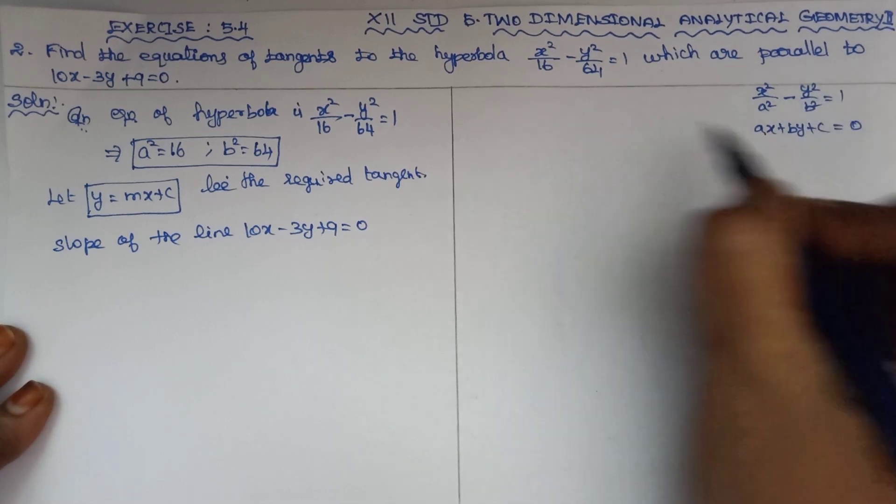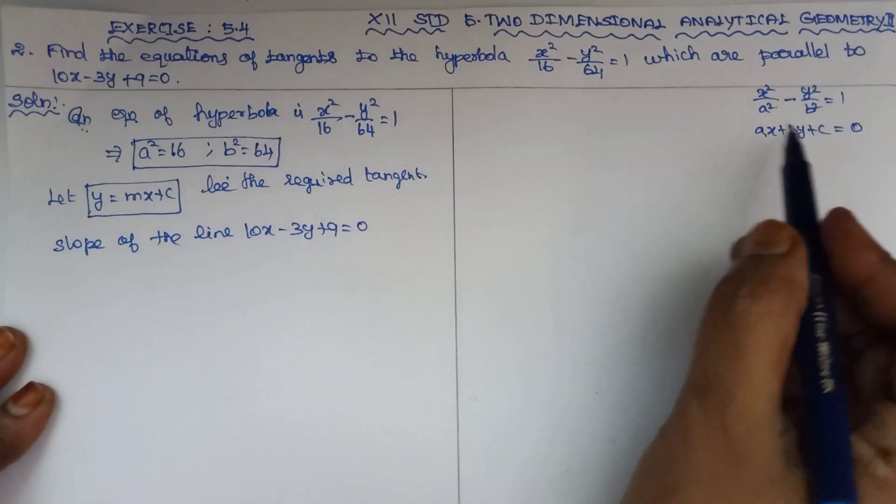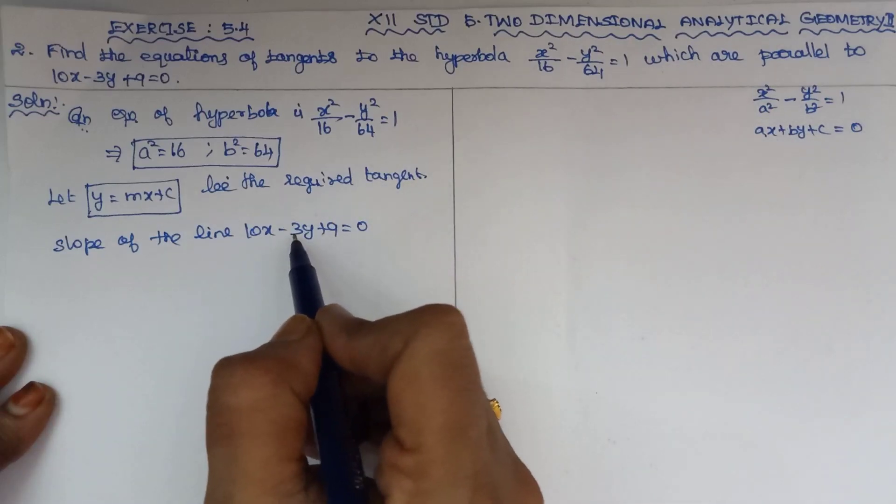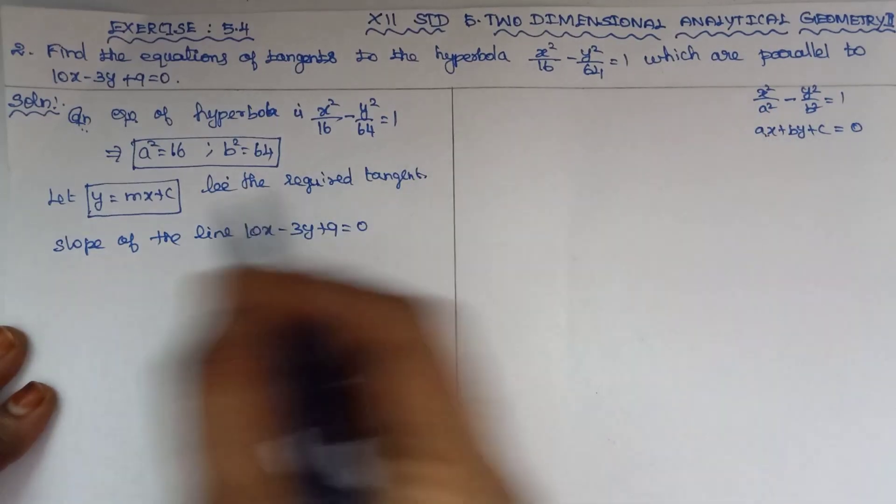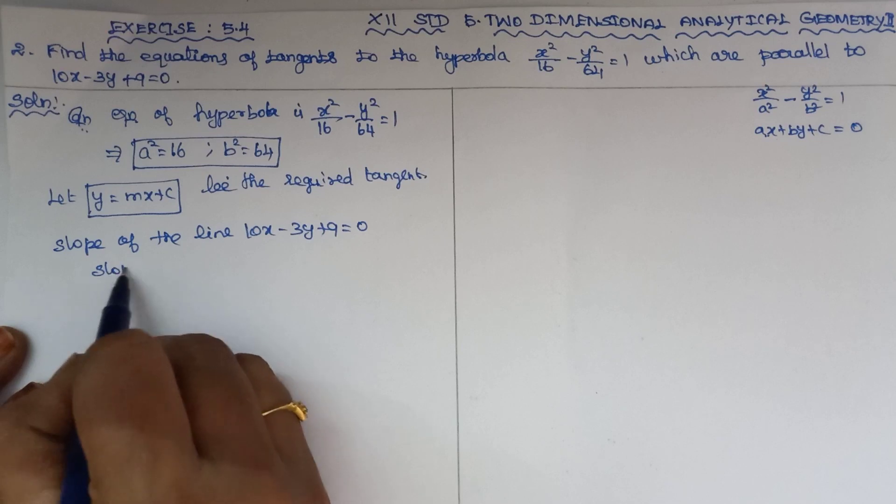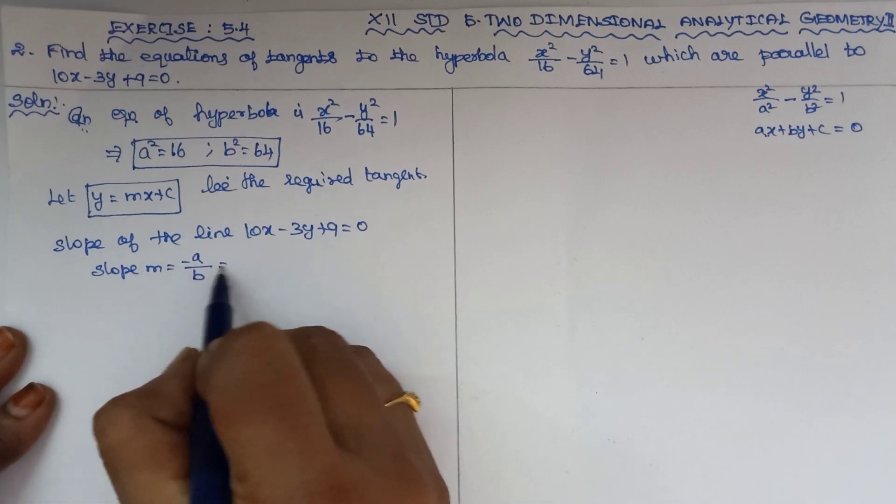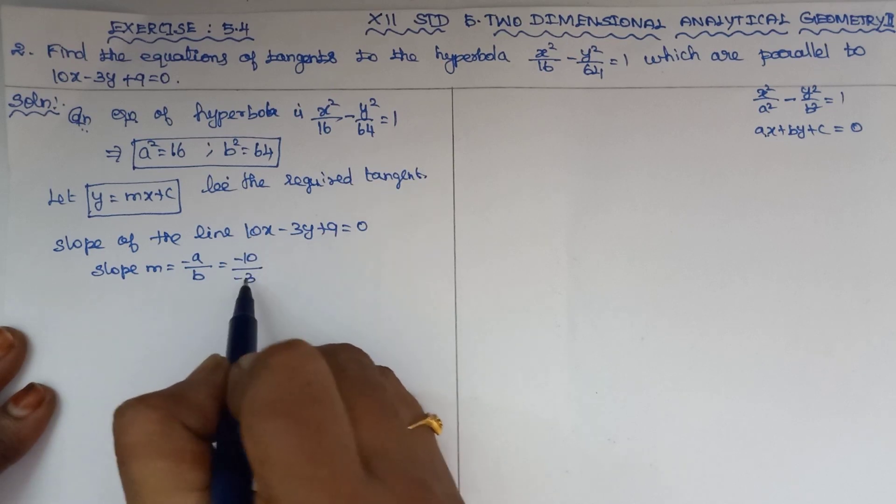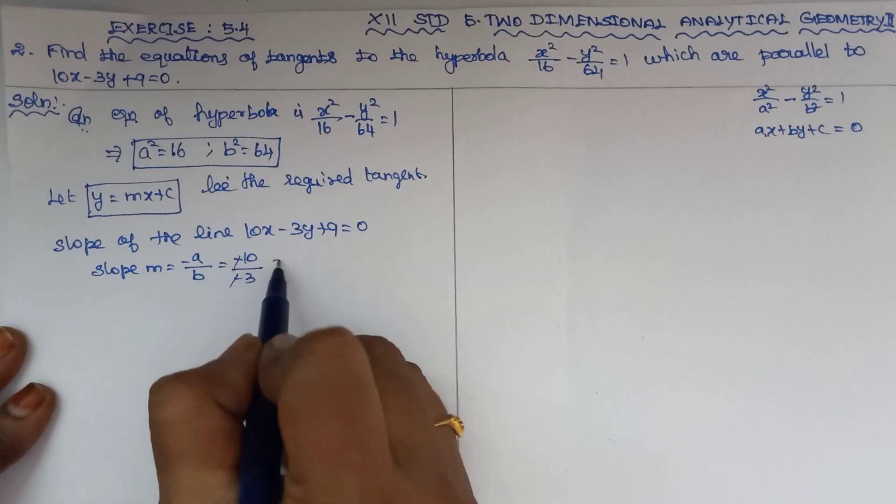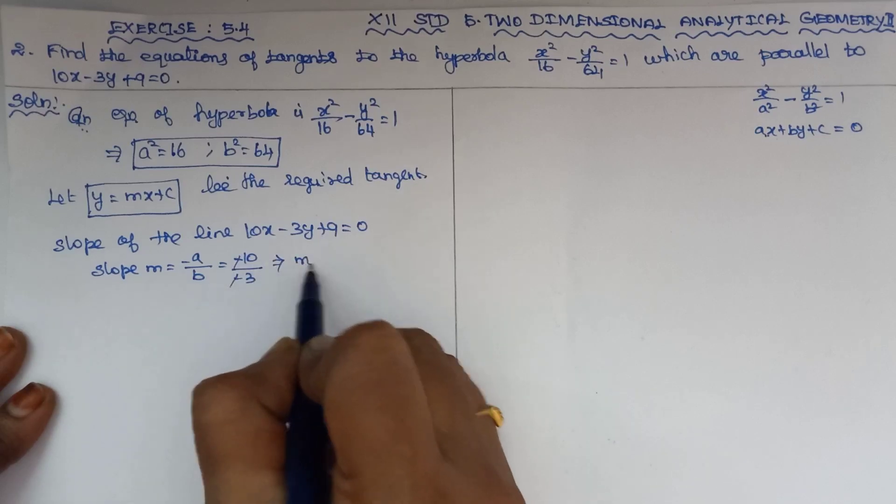A in the place is 10, B in the place is minus 3. Then, in the straight line, slope m is equal to minus A by B. A is 10, so minus 10 by B, which is minus 3. Minus minus cancel, m value is 10 by 3. Now m is found out.